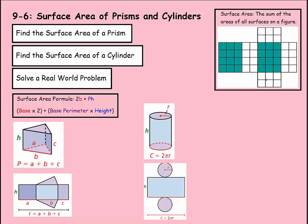There's a formula that we use for this: 2 times B plus P times H — in other words, the base times 2 plus the base perimeter times height. That makes sense here. If we're going to find all the surfaces, we would find the two bases — find the area of one base and multiply that times 2.